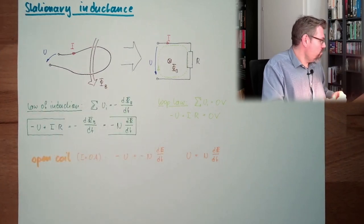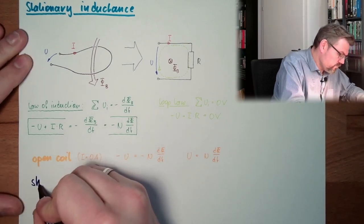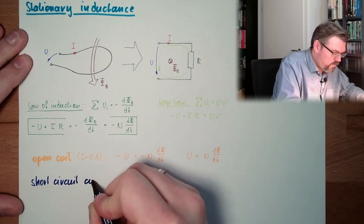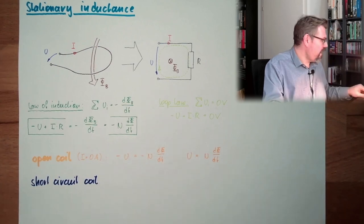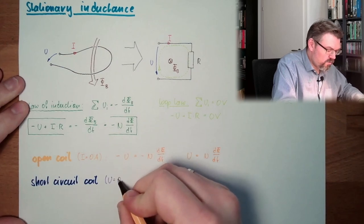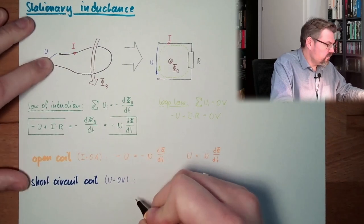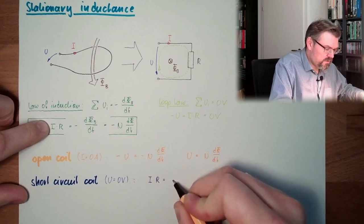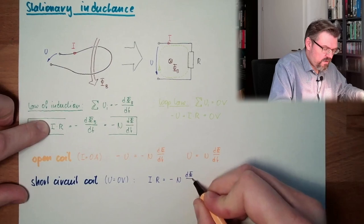Now, let's say, what is at a short circuit coil. What does this imply? This implies the voltage is zero. So u equals zero volts if we short circuit it here. So actually, what is left is i times r equals minus n dv dt.